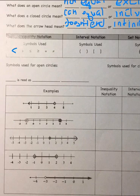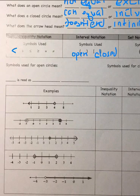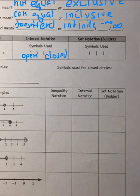Equal to, and does not equal. For symbols, we have parentheses which means it's open, and brackets which means closed. And in set notation there are additional symbols.